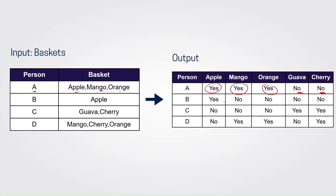Similarly for person B, we can see only apple, so there is only yes for apple and no for the remaining fruits. And for C, we can see guava and cherry, so you will see yes for guava and cherry only, otherwise it's no. And similarly for D, it is mango, cherry, and orange — yes for those, and no for the rest. I hope you are clear with the expected output from the input table.